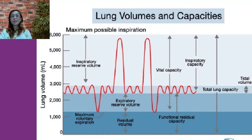Under normal conditions, the average adult takes 12 to 15 breaths a minute. A breath is one complete respiratory cycle that consists of one inspiration and one expiration. An instrument called a spirometer is used to measure the volume of air that moves into and out of the lungs, and the process of taking the measurement is called spirometry. Respiratory or pulmonary volumes are an important aspect of pulmonary function testing because they can provide information about the physical condition of the lungs.